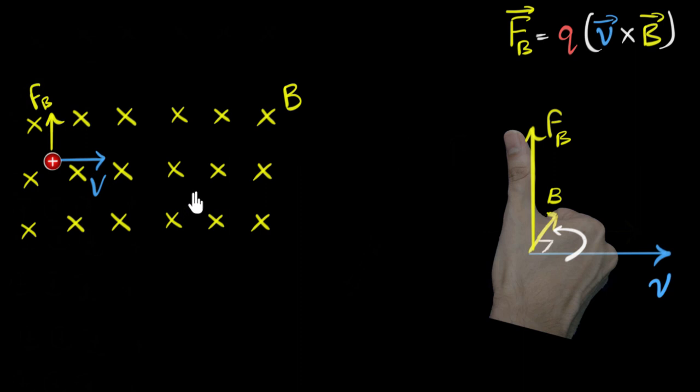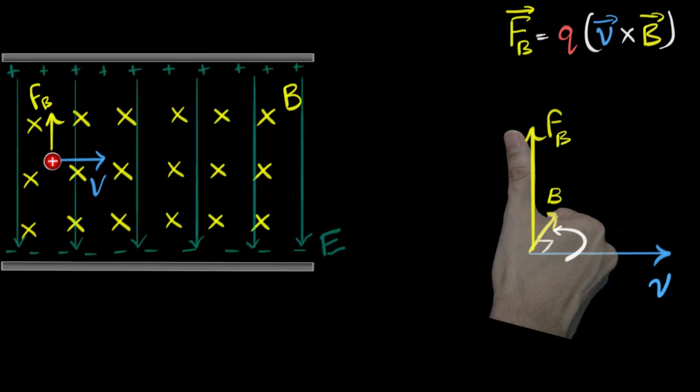Now if this was the only field available, we can pretty much predict the path of that charge particle is gonna go up like this. But now, along with the magnetic field, let's say we also introduce an electric field. We will introduce an electric field to ensure that the force acting due to the electric field is in the opposite direction. So over here, since the magnetic force is upwards, we want the electric force to be downwards. We want the electric force to be downwards, and so we'll put an electric field downwards. Here's our electric field, and you can imagine you're putting that by using large plates of charge.